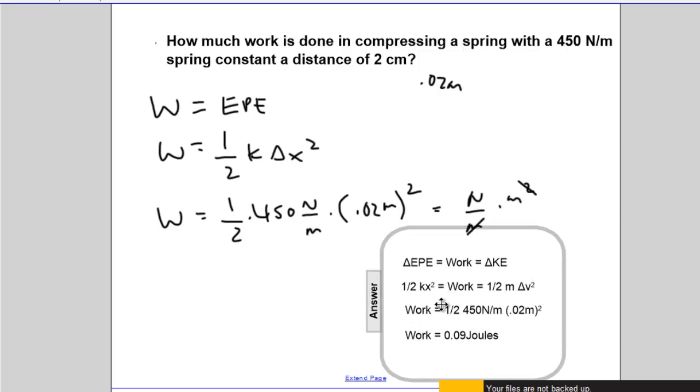Again, work is equivalent to the change in potential energy. So the relevant part of this equation, there is no kinetic energy, the work done is equal to 1 half Kx squared. Pop the numbers in your calculator, give it a try yourself.